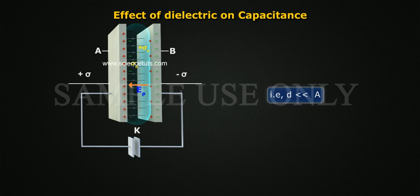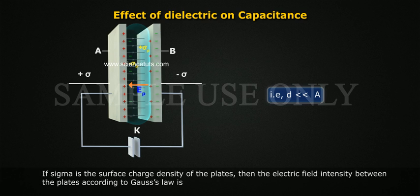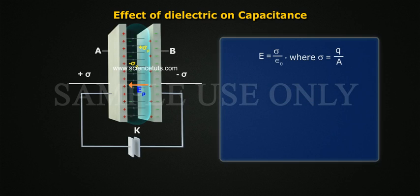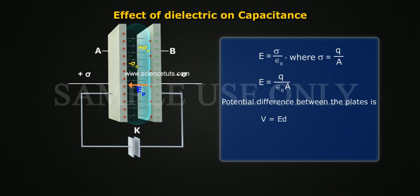If sigma is the surface charge density of the plates, then the electric field intensity between the plates according to Gauss's law is E equals sigma by epsilon naught equals Q by epsilon naught A. Potential difference between the plates is V equals ED, which is V equals QD by epsilon naught A.